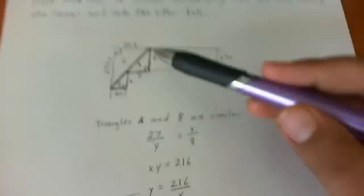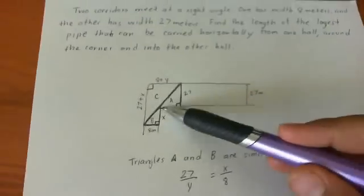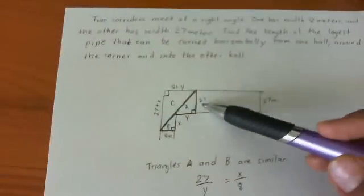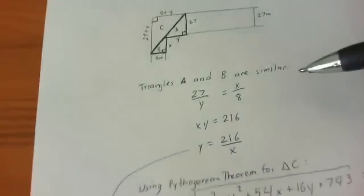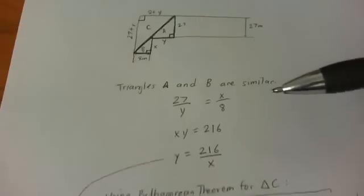So I noticed something. I turned this into triangles and I noticed that triangles A and B are similar. So I called this length Y and I called this length X and then I said that 27 over Y is equal to X over 8. Therefore XY equals 216. So Y equals 216 over X.